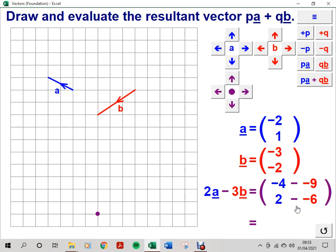Our skills working with directed numbers are needed now to evaluate minus 4 subtract minus 9 as minus 4 plus 9, which equals 5. Evaluate 2 subtract minus 6 as 2 plus 6, which equals 8. So the resultant vector is 5, 8.